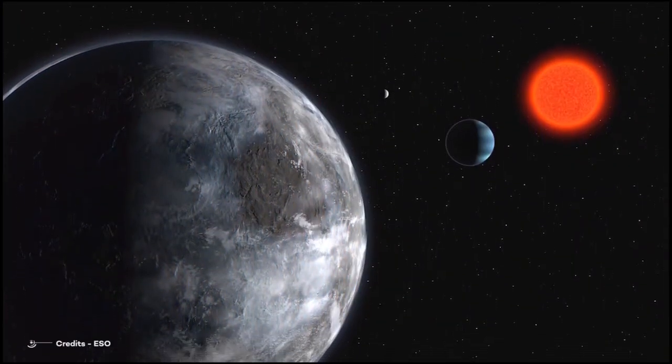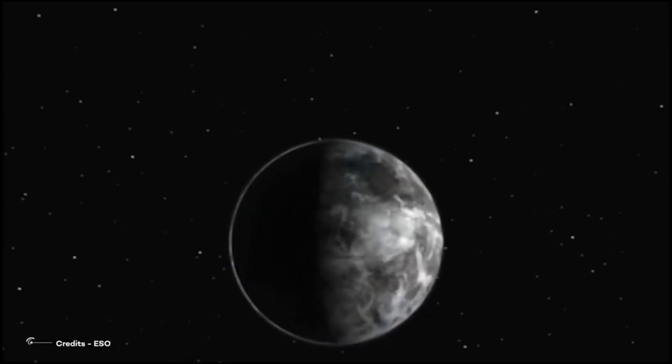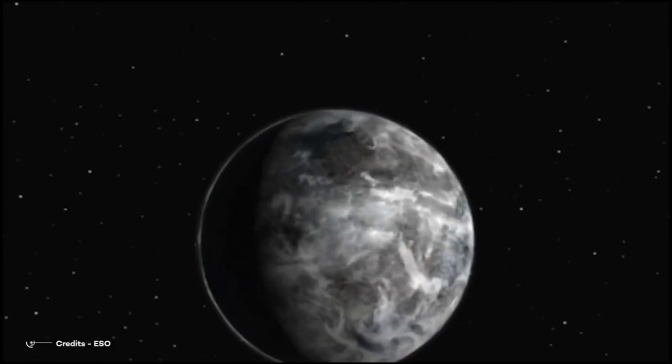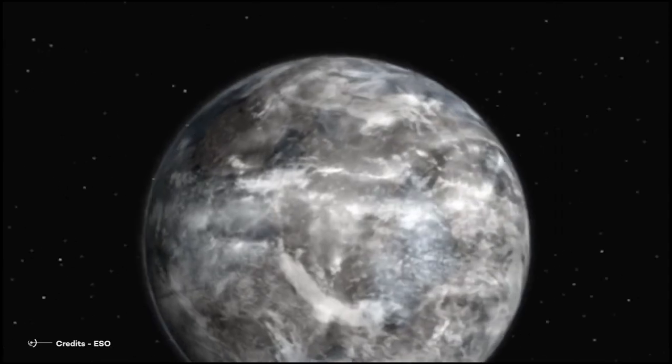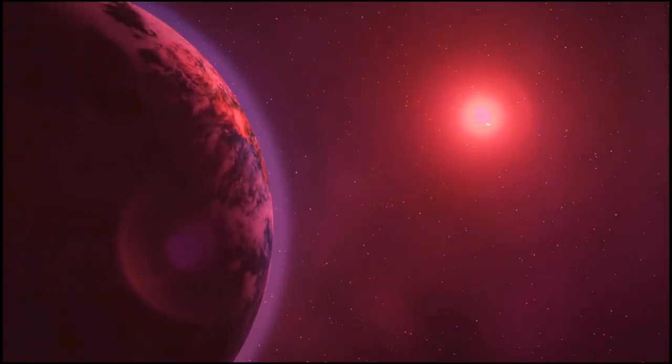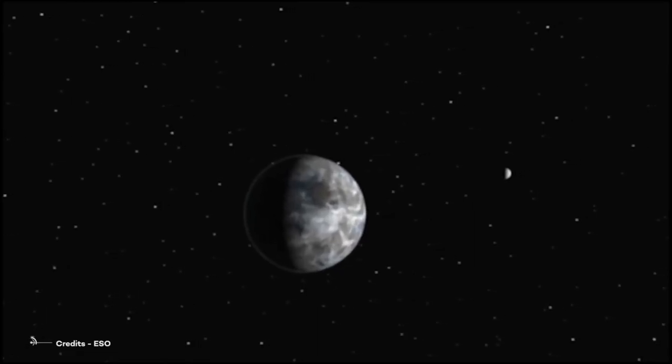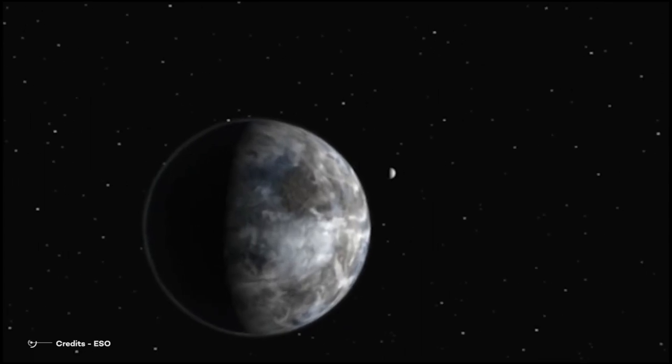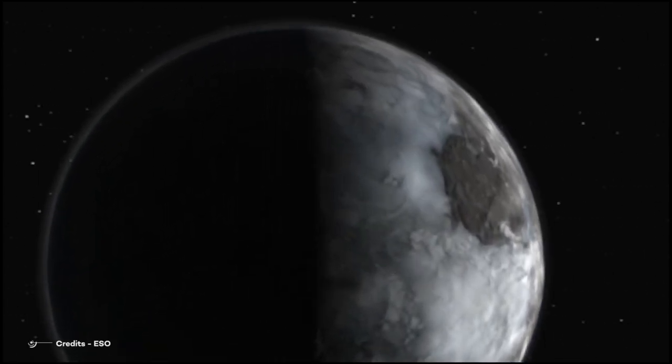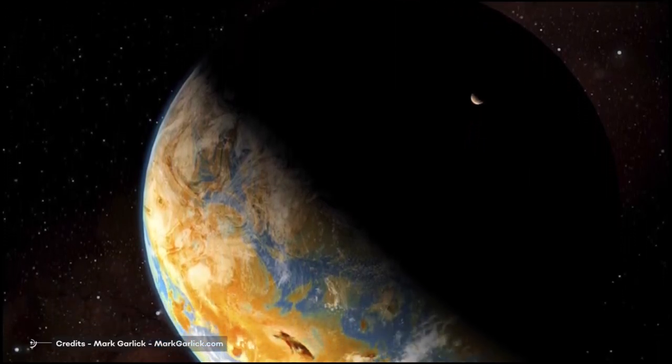Unfortunately, Gliese 581 appears to be tidally locked, which means one side always faces the sun, and the other always points to the inky darkness of space, much to our surprise. As a result, one half of the formerly promising planet is scorching hot, while the other is cold. The tiny strip around the edge, where it's neither too hot nor too cold, might theoretically be home to life. However, this is simply hypothetical. In any case, the property values on that day would be crazy.